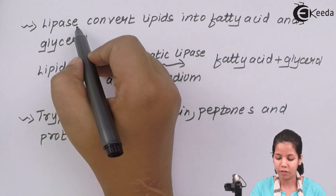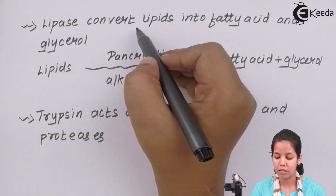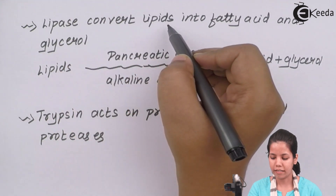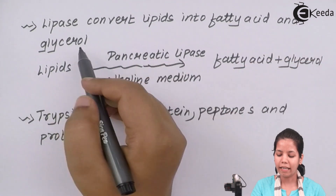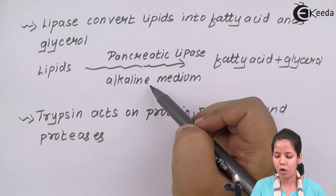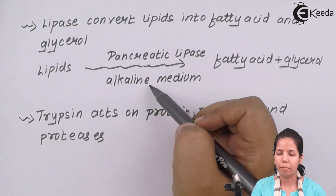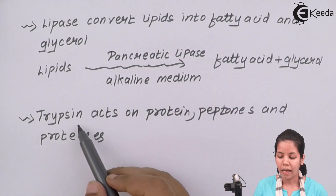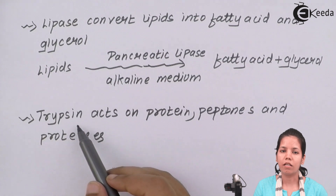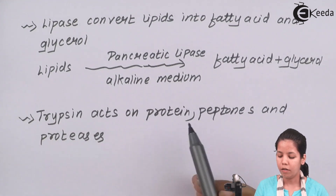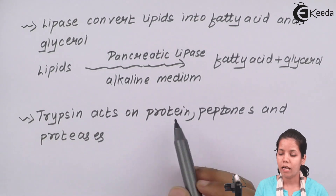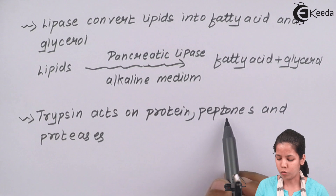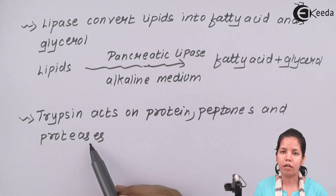Lipase is one of the pancreatic enzymes that converts lipids — or fats — into fatty acids and glycerol, in the presence of an alkaline medium provided by the human body. The third enzyme is trypsin, and trypsin is associated with proteins. Trypsin acts on proteins and forms peptones and proteases, which are the byproducts of protein breakdown.